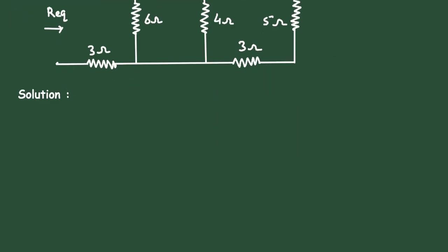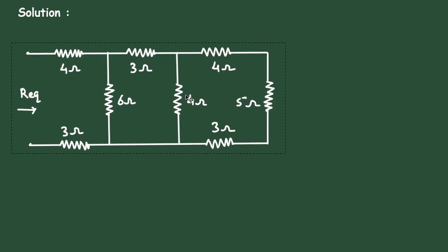Solution. First of all, here we can see this 4 ohm, 5 ohm, and 3 ohm. These are connected in series. So when resistances are connected in series, we have to add them.